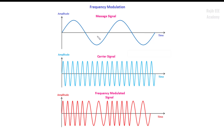The next type is Frequency Modulation (FM). In FM, we have a message signal and a high-frequency carrier signal. If the carrier signal frequency varies according to the message signal — when the message signal amplitude is low, the carrier frequency is low, and when the message amplitude is high, the carrier frequency is high — this is called Frequency Modulation.